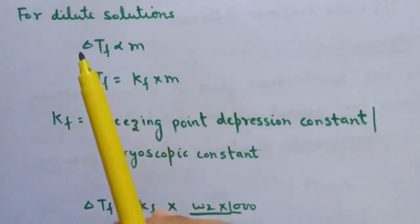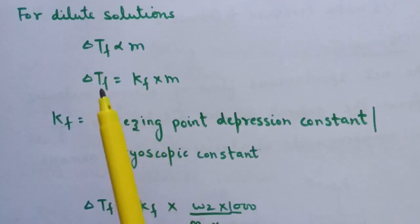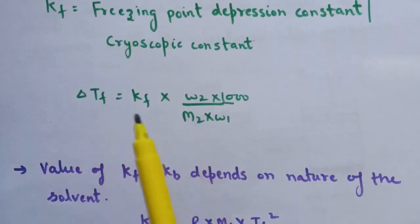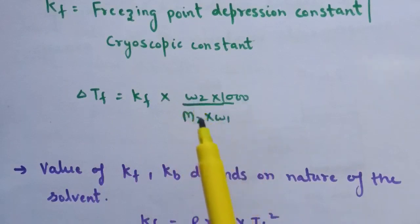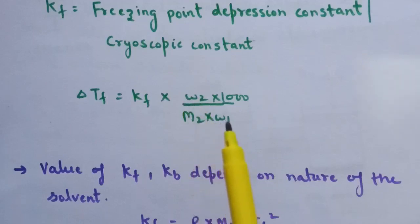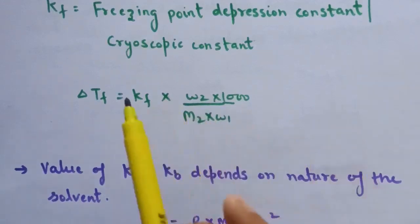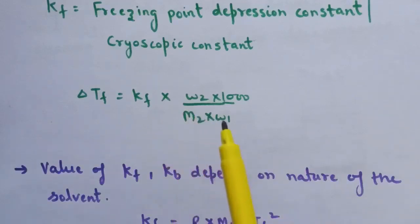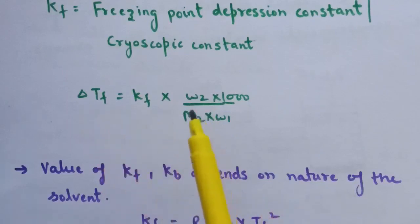For dilute solutions, ΔTf is directly proportional to molality. Introducing the proportionality constant gives ΔTf = Kf × m, where Kf is the freezing point depression constant, also known as the cryoscopic constant. The full expression is: ΔTf = (Kf × W2 × 1000)/(M2 × W1), where W2 and M2 are mass and molar mass of solute and W1 is weight of solvent in grams. From this, we can calculate the molar mass of solute if Kf, ΔTf, W1, and W2 are known.